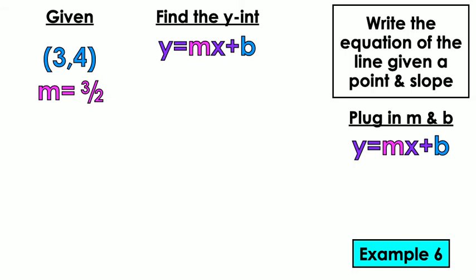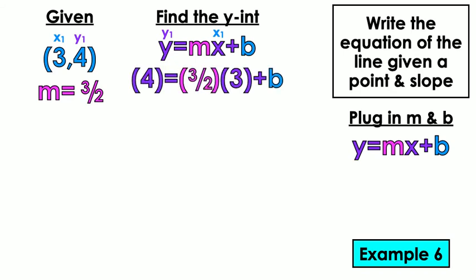Last example. Example number 6. We have 3 comma 4. M equals 3 halves. You should probably try this example by your darn self, to be honest. Is this the one that's going to come out complicated? Yeah, a little bit actually. Never mind. So 4 equals 3 halves times 3. What's 3 halves times 3? And now you're like, wait, that one's not like an easy fraction.